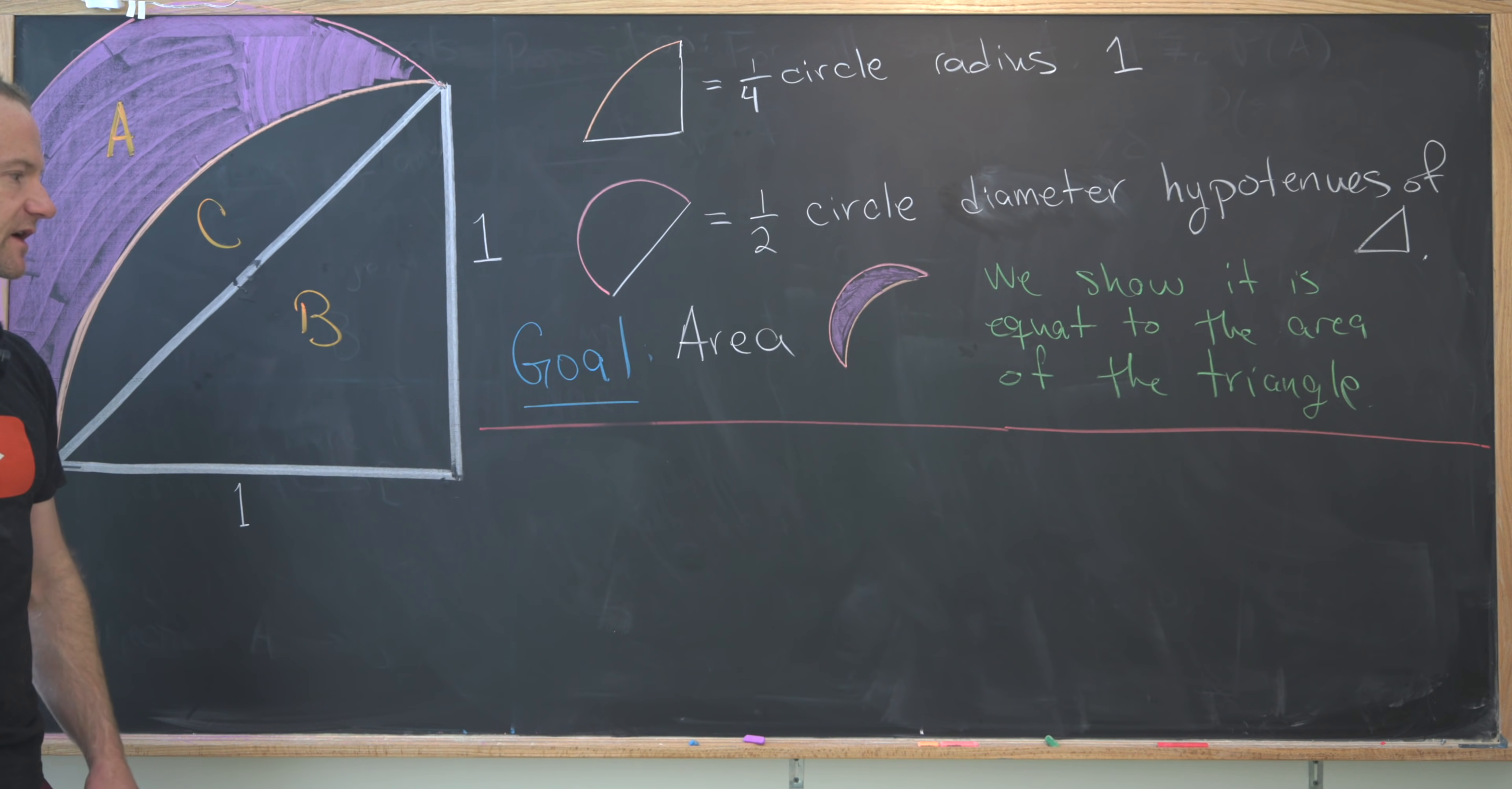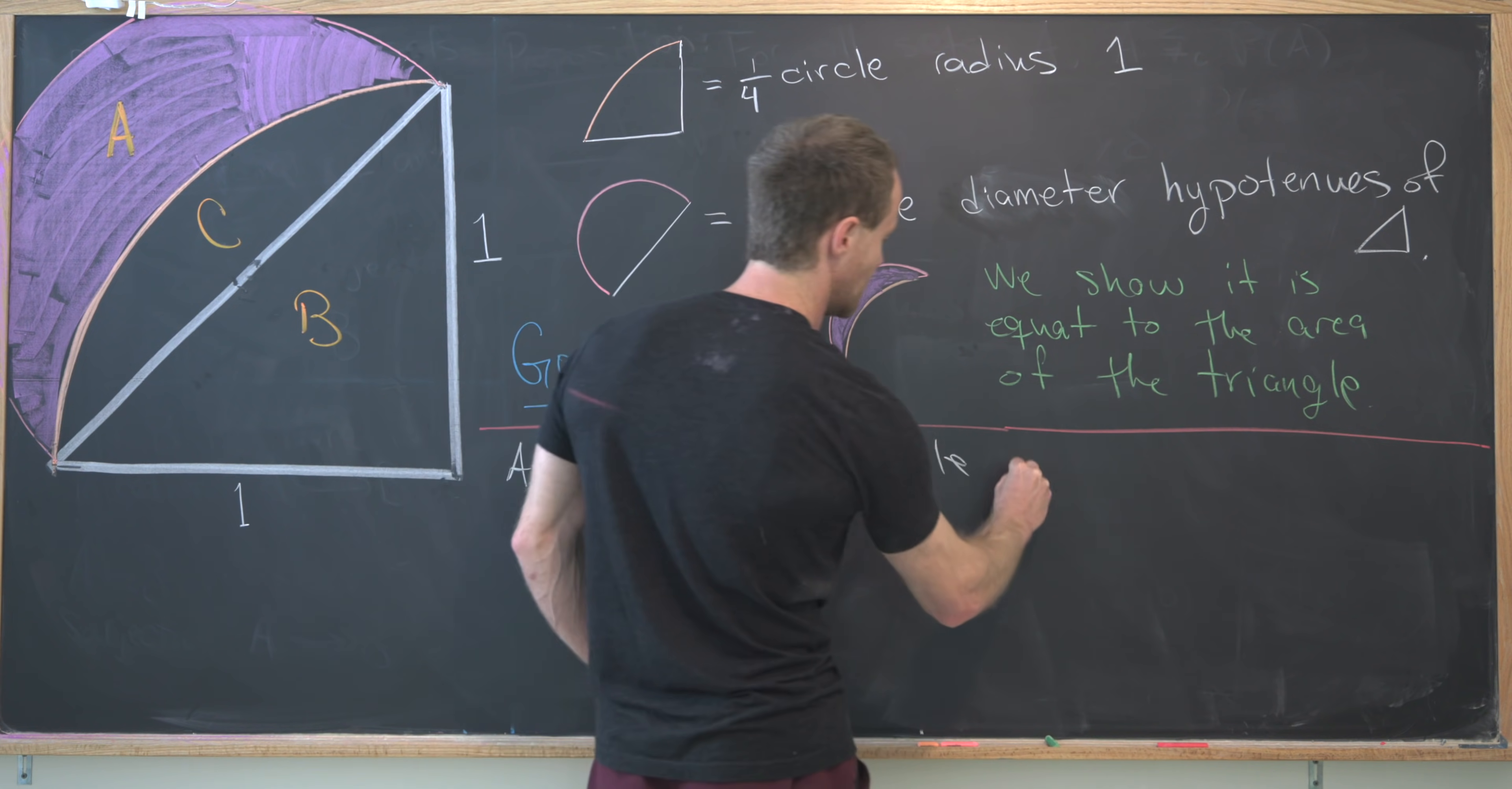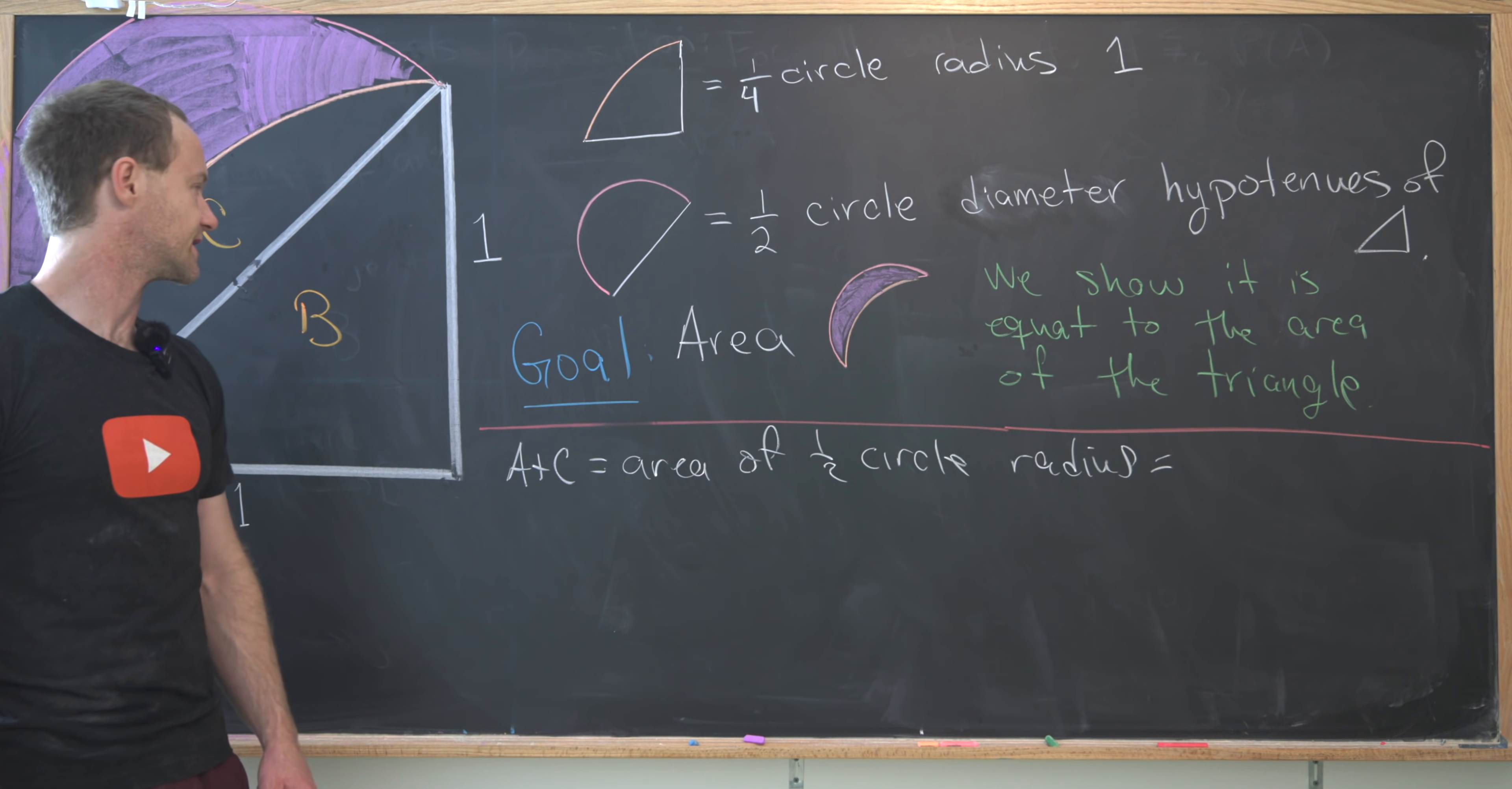And I want to notice that I can calculate the combination of a couple of these very quickly. So let's notice that A plus C equals the area of a half circle with a radius of, well, we actually need to do a bit of calculation in order to compute that radius.